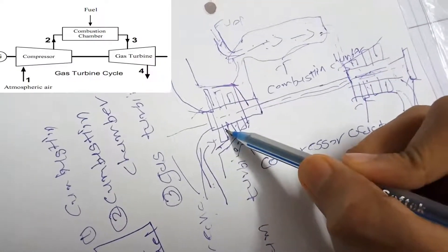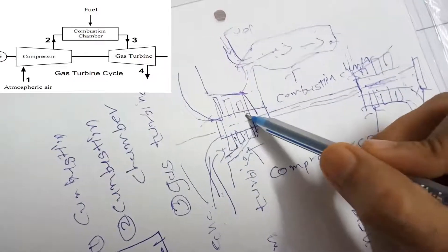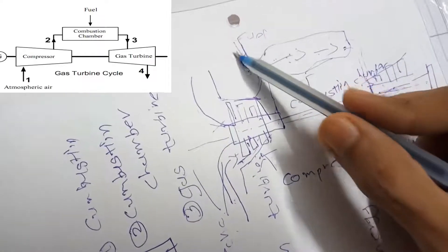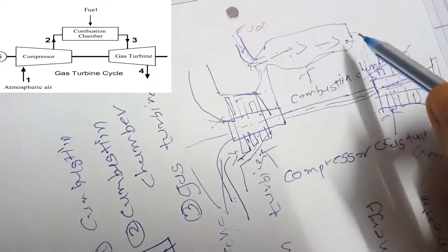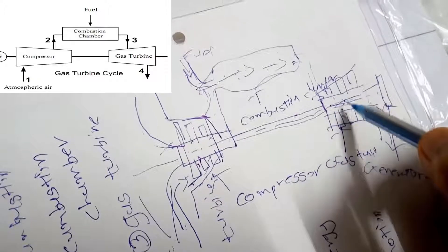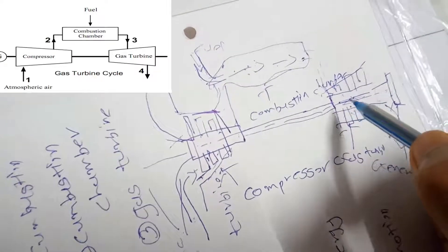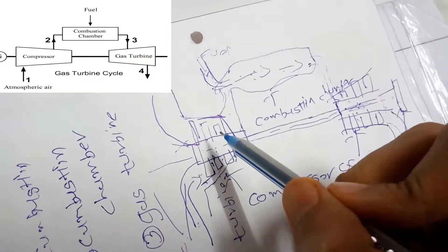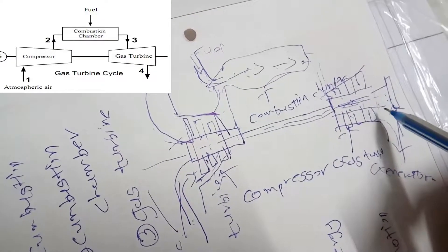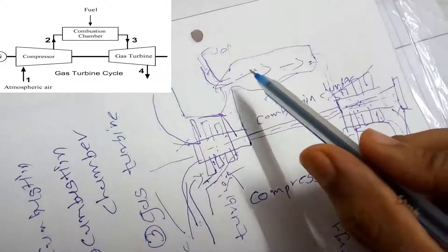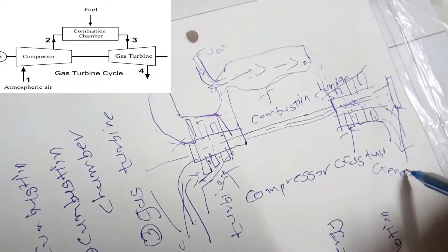To repeat: first, air comes inside the compressor and gets compressed by the blades. Then it goes to the combustion chamber where air and fuel mix and combust. The combusted gases then enter the gas turbine, making the blades rotate and generating power. A larger part of the power goes to the compressor to compress the air, and the remaining power is used to generate electricity. After this, the gas mixture is exhausted from the exhaust valve.